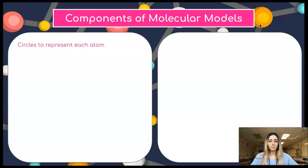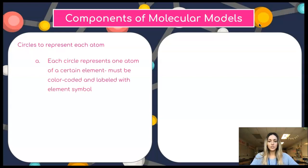Some things to keep in mind when creating your molecular models. Each of these circles should represent one single atom of a certain element. In order to identify the element that it represents, it should be color-coded and identified with the appropriate elemental symbol of the element that it is that you are trying to represent.